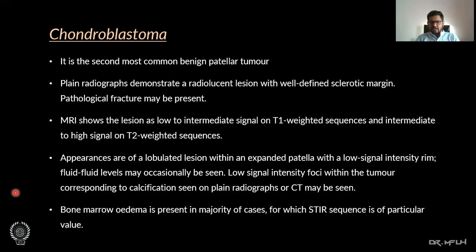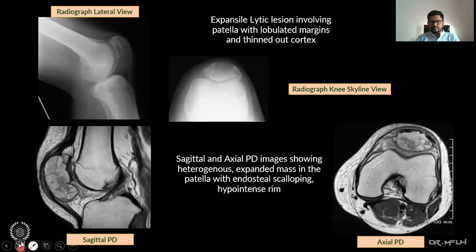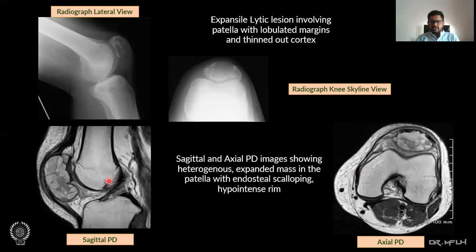Bone marrow edema is present in the majority of cases, for which the STIR sequence is of particular value. Here we can see a lateral radiograph of the knee and the knee skyline view showing a lytic lesion involving the patella with lobulated margins and a thinned-out cortex. Sagittal proton density and axial proton density knee images show a heterogeneous expanded mass in the patella with endosteal scalloping and a hypointense rim.